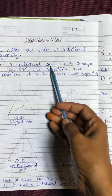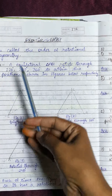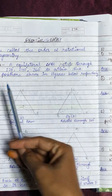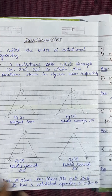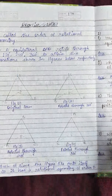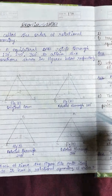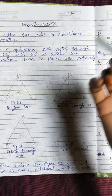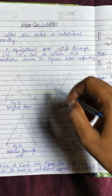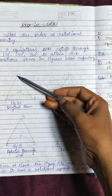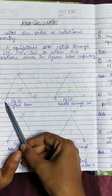For example, an equilateral triangle ABC is rotated through 120 degrees, 240 degrees, and 360 degrees to attain the positions shown in the figure. Suppose we take an equilateral triangle — like the triangle cutouts in your geometry box.